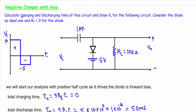Now I will show you an example of negative clamper circuit with bias. I have to calculate charging and discharging time of the circuit to show that the charging time is much smaller than the discharging time, so that our circuit will act as a clamper circuit, and at the end I have to draw the output voltage. I have to consider the diode as ideal with forward resistance equal to zero. The circuit has a capacitor of 1 microfarad, a diode D, a biasing voltage of 5 volt, and a load resistor of 10 kilo ohm.